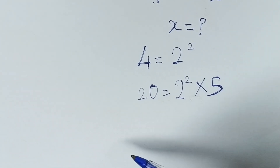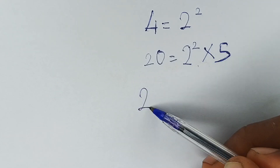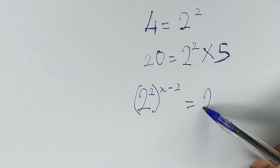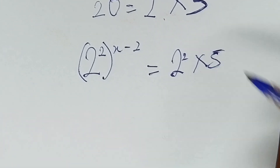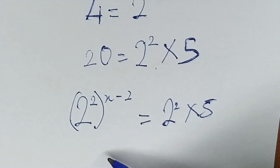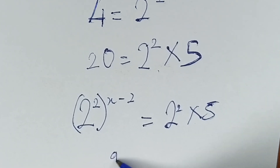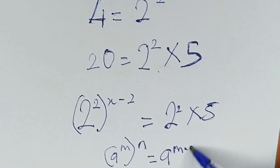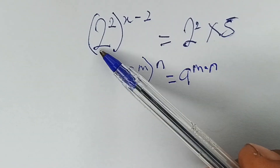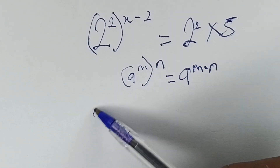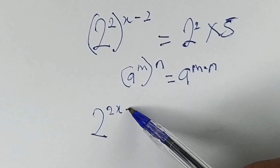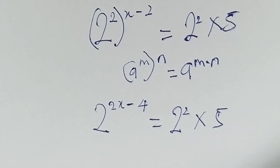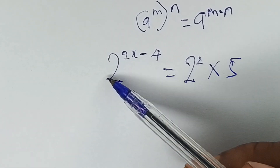So 4 is 2 squared, so we write 2 squared raised to the power of x minus 2, equal to 2 squared times 5. Now, when you have an expression in the form of a raised to power m, all raised to power n, it becomes a raised to the power m times n. So 2 raised to power 2, all to the power x, becomes 2 raised to power 2x minus 4, equal to 2 squared times 5.